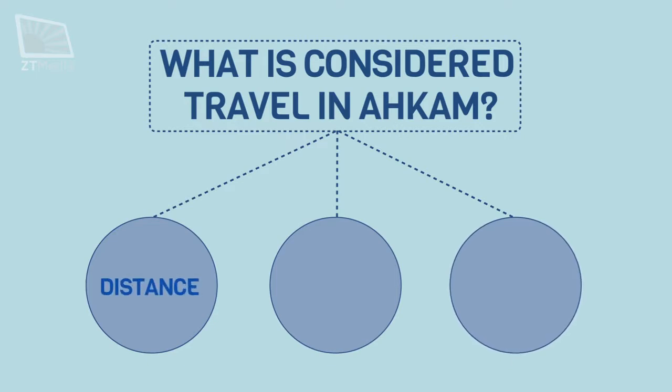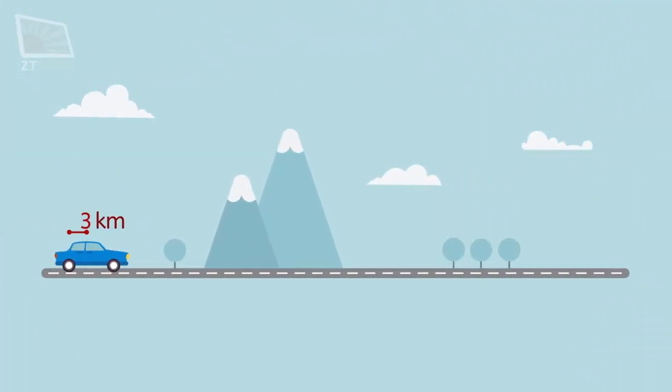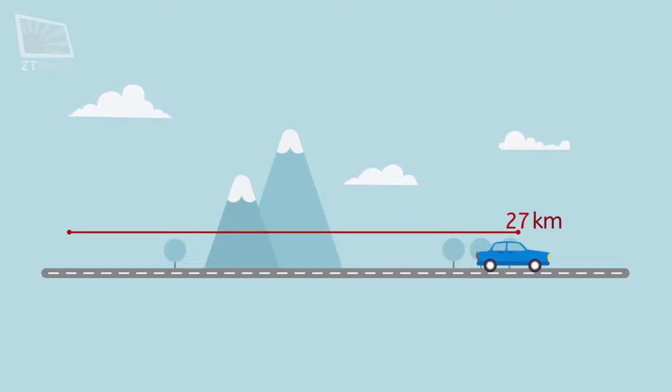There are three conditions which will make a person a traveller: travelling the legal distance, having the intention from the beginning of the journey to cover the distance, and lack of disruption in the journey. We shall explain each of these briefly. The first condition.